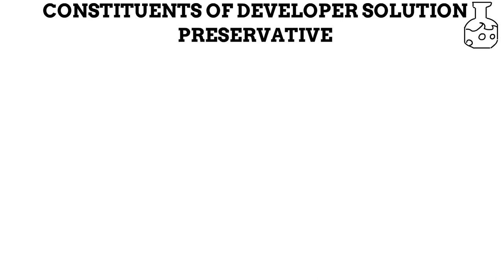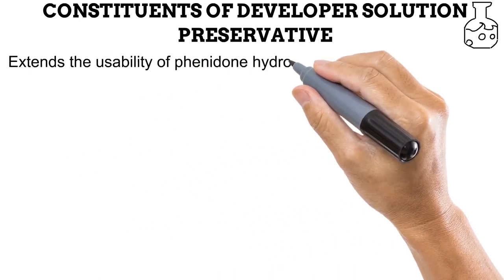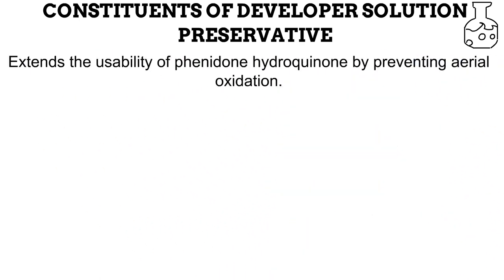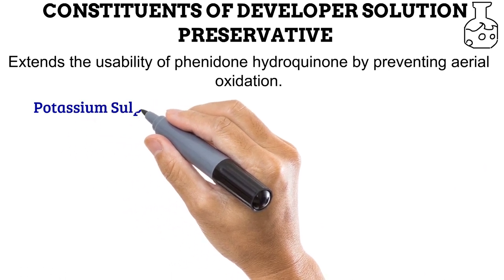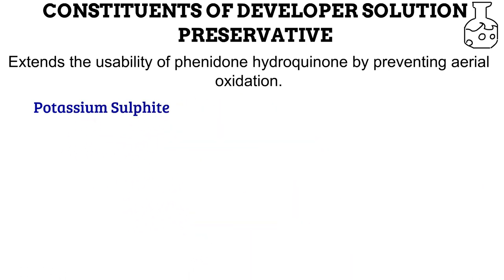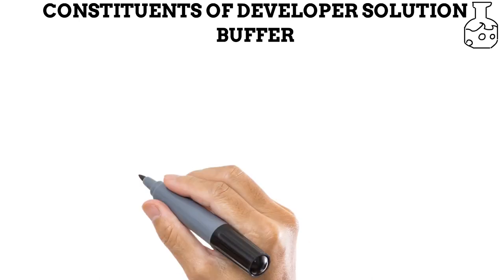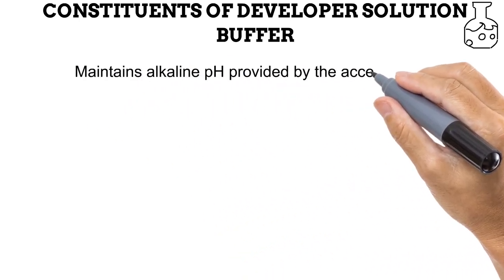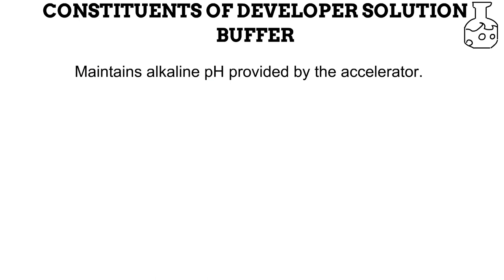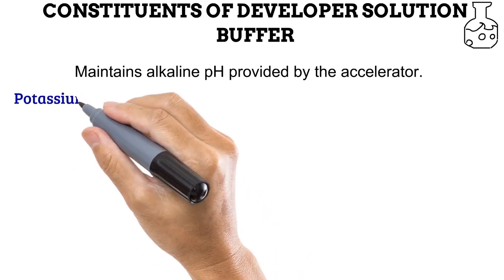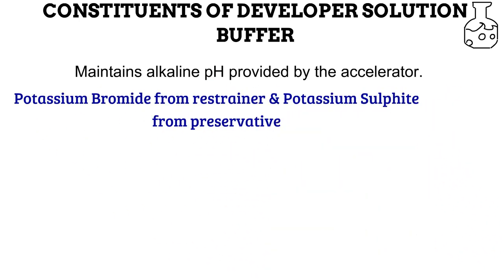Because of the function of reduction carried out by the developing agent, it has a tendency to break down, get oxidized, and become useless. The preservative helps to extend the lifespan of the developing agent by preventing processes like aerial oxidation. A common preservative used in the developer solution is potassium sulfite. Processes such as aerial oxidation can affect the pH of the developer solution, and a buffer effect is needed to maintain the alkaline pH the accelerator provides. No extra buffer is usually added, because a buffer effect is already provided by the restrainer and the preservative.